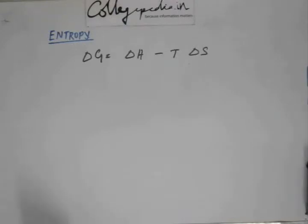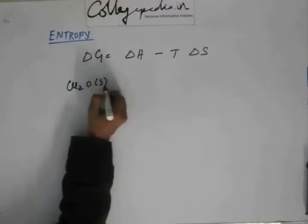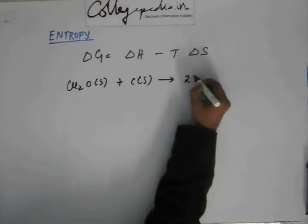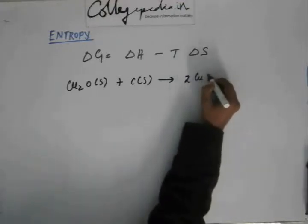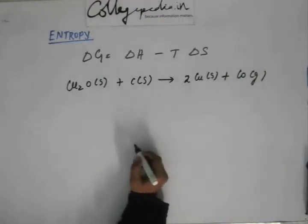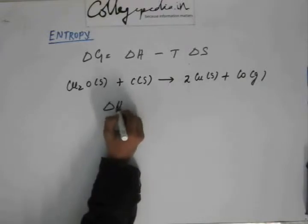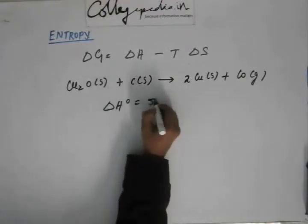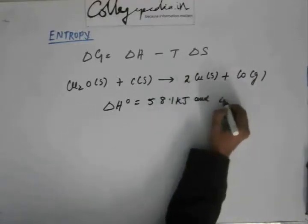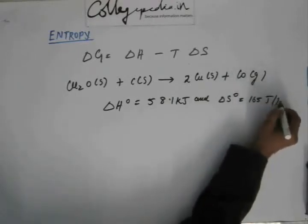Now, let us suppose this equation. Cuprous oxide in solid state plus carbon in solid state. That's cuprous oxide is getting reduced to copper, and carbon monoxide gas is being formed. Now, in this expression, suppose I have given you delta H0 as 58.1 kilojoule...